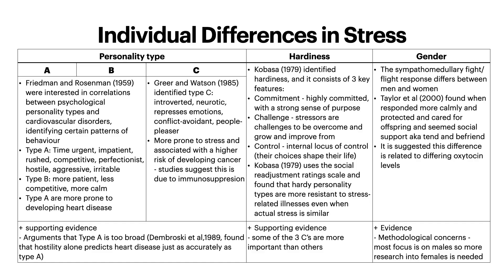Then you have gender differences in stress. Looking at the sympathomedullary fight-or-flight response difference between men and women, Taylor et al. in 2000 found that women responded more calmly — they protected and cared for offspring and sought out social support, known as 'tend and befriend'. It is suggested this difference is related to differing oxytocin levels. There is evidence for this from Taylor et al., but there are methodological concerns as most research into fight-or-flight responses is focused on males, so more research into females is needed.